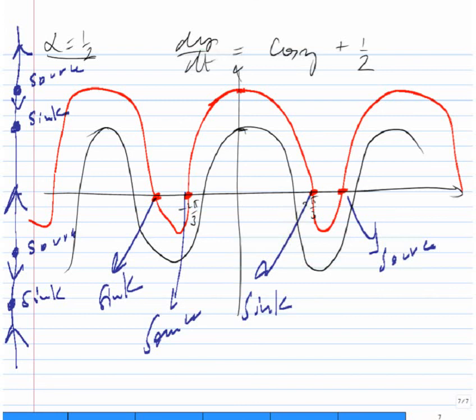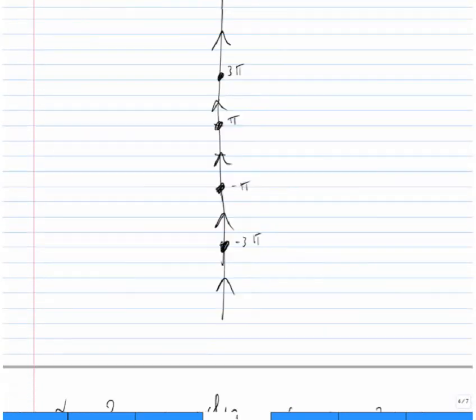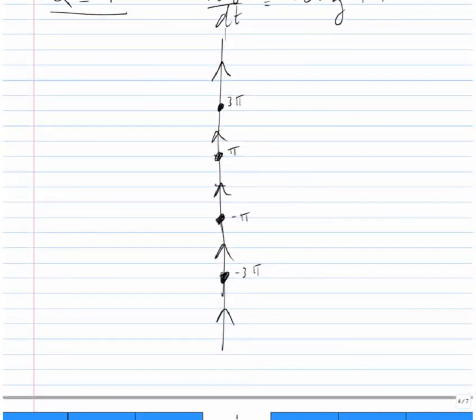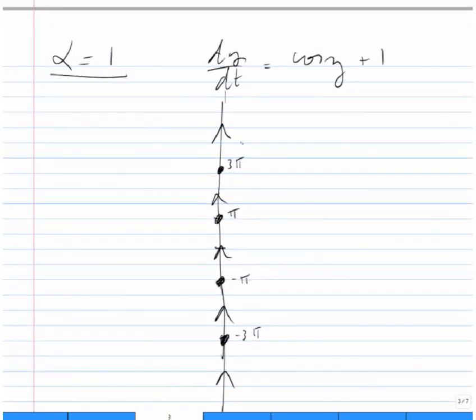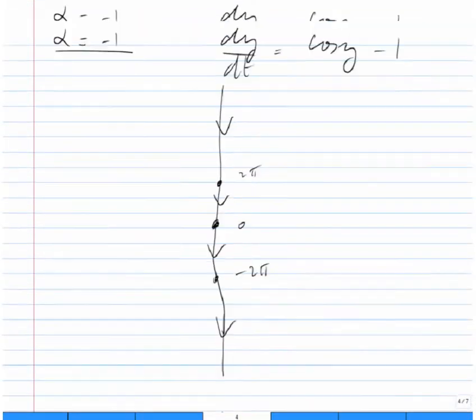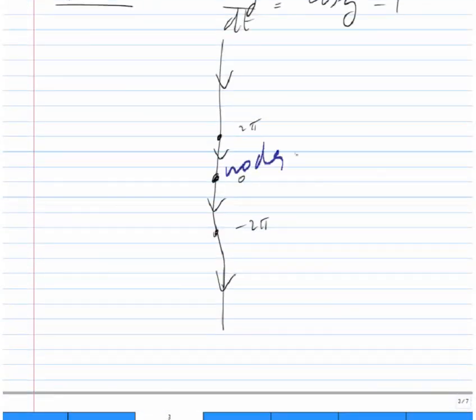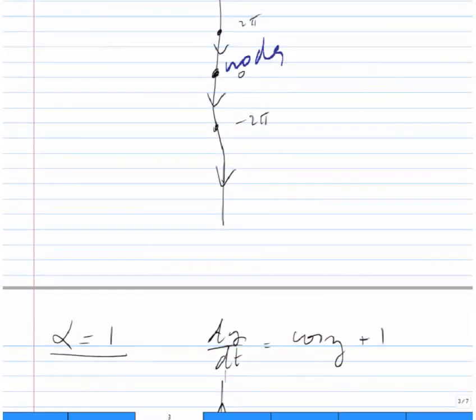This gives the phase lines for all the requested cases, with constant solutions classified as sinks, sources, or nodes. For α = 1, all solutions are going up toward the equilibria, so they are all nodes. Similarly, for α = -1, all equilibria are also nodes.